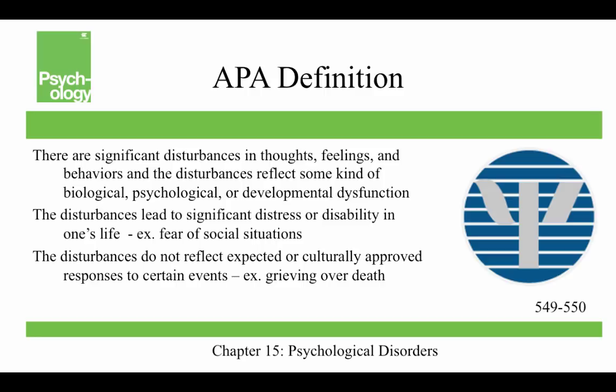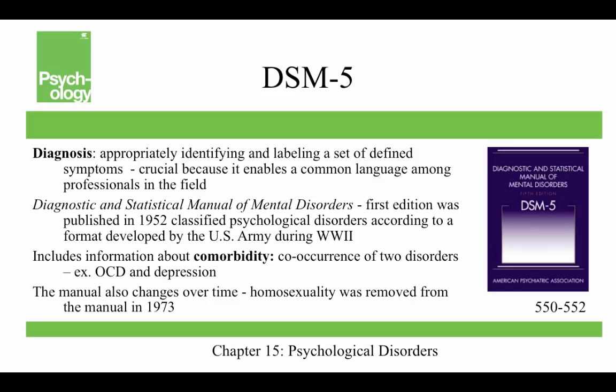The American Psychological Association says there are significant disturbances in thought, feelings, and behaviors, and the disturbances reflect some kind of biological, psychological, or developmental dysfunction. The disturbances lead to significant distress or disability in a person's life — for example, they may fear social situations and never go out to attend class or get a job. And the disturbances do not reflect expected or culturally approved responses to certain events — for example, grieving over someone's death is a culturally approved response and wouldn't be considered a disorder.